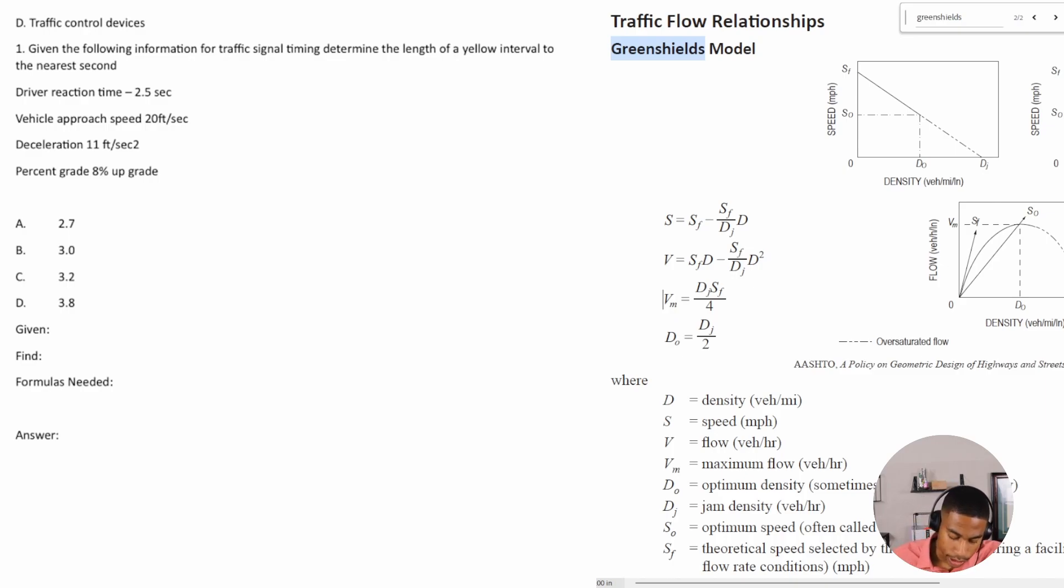For number one, it says: given the following information for traffic signal timing, determine the length of a yellow interval to the nearest second. Okay, so we have driver reaction time 2.5, vehicle approach speed is 20 feet per second, deceleration is 11 feet per second squared.